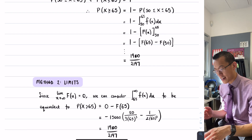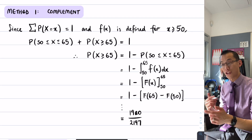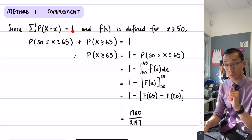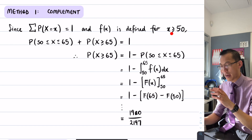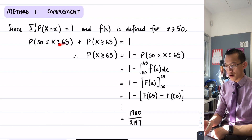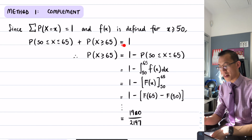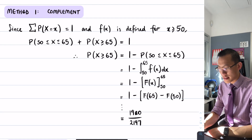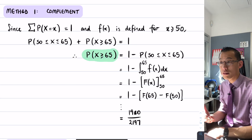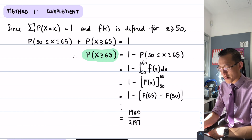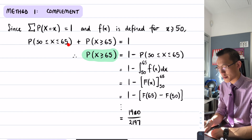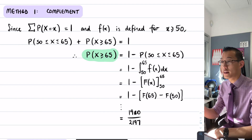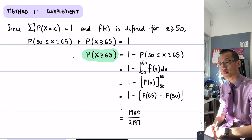You can also approach it the other way: the total probability — every probability added up — equals one. I know this function exists for anything from 50 onwards. So if I say from 50 to 65, and then from 65 onwards, that should catch everything — that's one. This is the actual thing I want. Because I want P(X > 65), I subtract the other term from both sides — that's how it ends up over here. And this turns into an integral with a nice lower boundary, nice upper boundary, and you evaluate it like before.